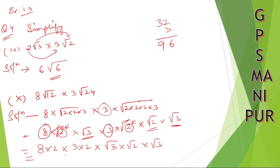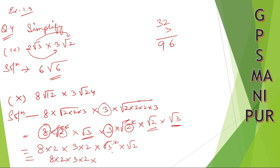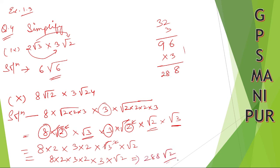Wait, wait a moment. So 8 into 2 into 3 into 2 into root 3 into root 3 — this will become root 3 squared, and square and root cancel. So it is 3 into root 2. Now if you multiply all these: 96 into 3, you will get 288 root 2. This is your answer.